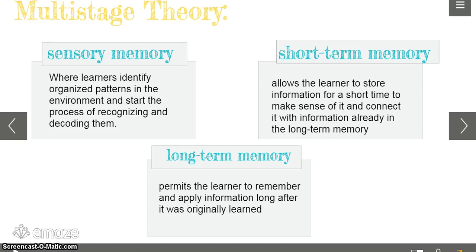We've all had classes that have talked about sensory memory, short-term, and long-term memory. But as kind of a review, the sensory memory is where learners identify organized patterns in the environment and start the process of recognizing and decoding them. While the short-term memory allows the learner to store the information for just a little bit of time and then connect it with information already in the long-term memory. And then we move on to the long-term memory, which permits the learner to remember and apply information long after it was originally learned.